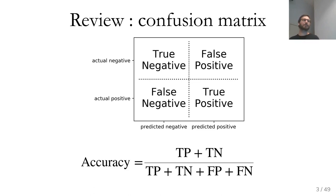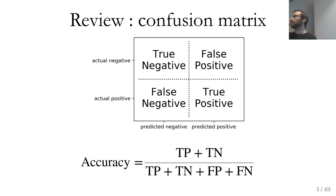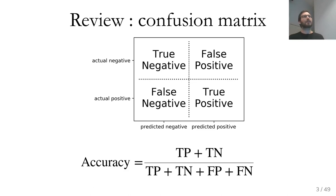In binary classification we often speak about the positive and negative class. Which class is positive and which is negative is convention. By convention, usually the minority class is the positive class — the class you're interested in. So if you do medical diagnosis, the positive class is usually the disease. If the person doing the analysis didn't think about this, everything might be mixed up, so always make sure you know which class is positive and which is negative.